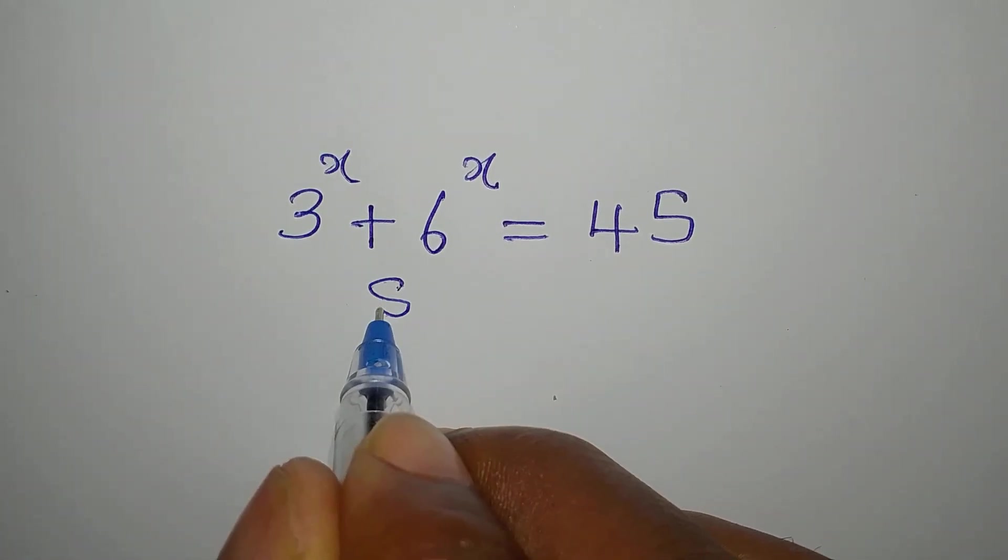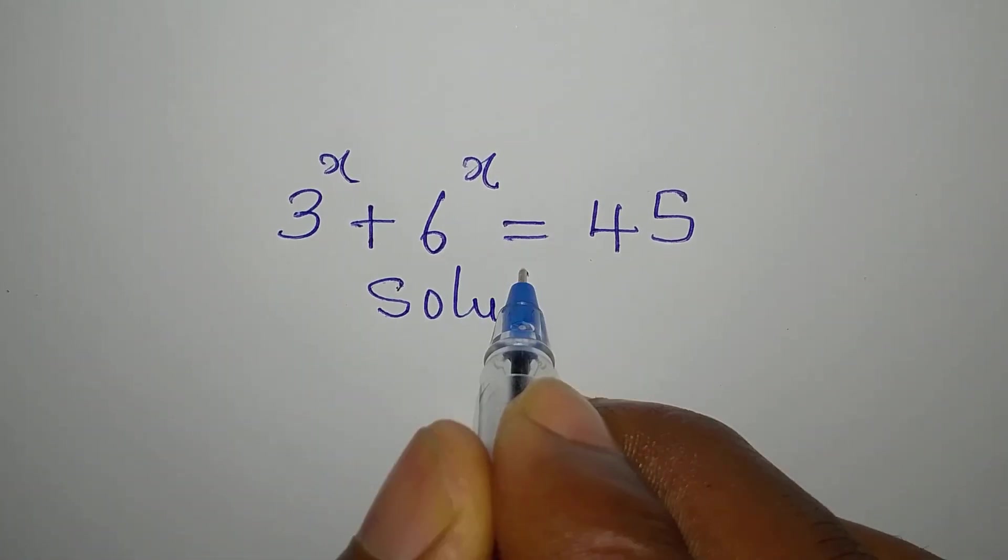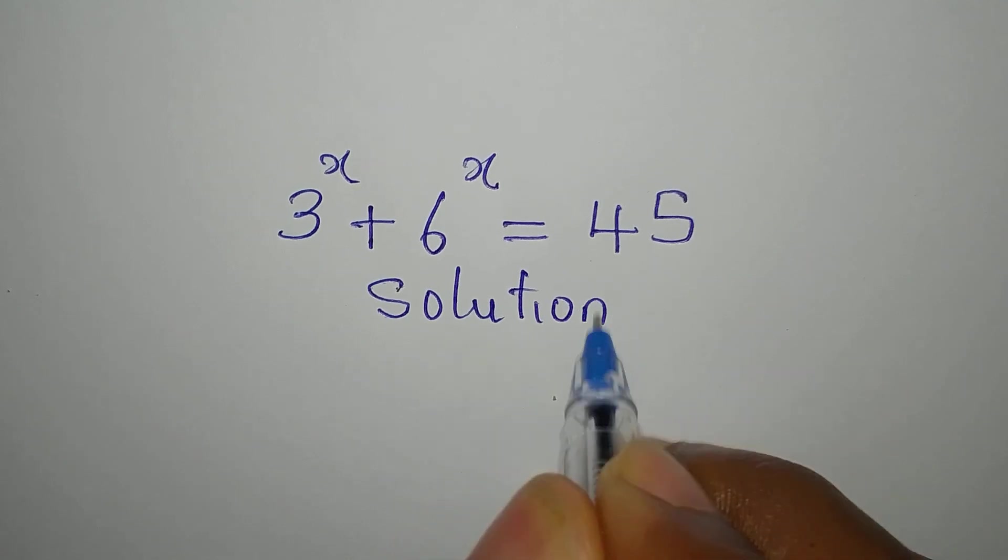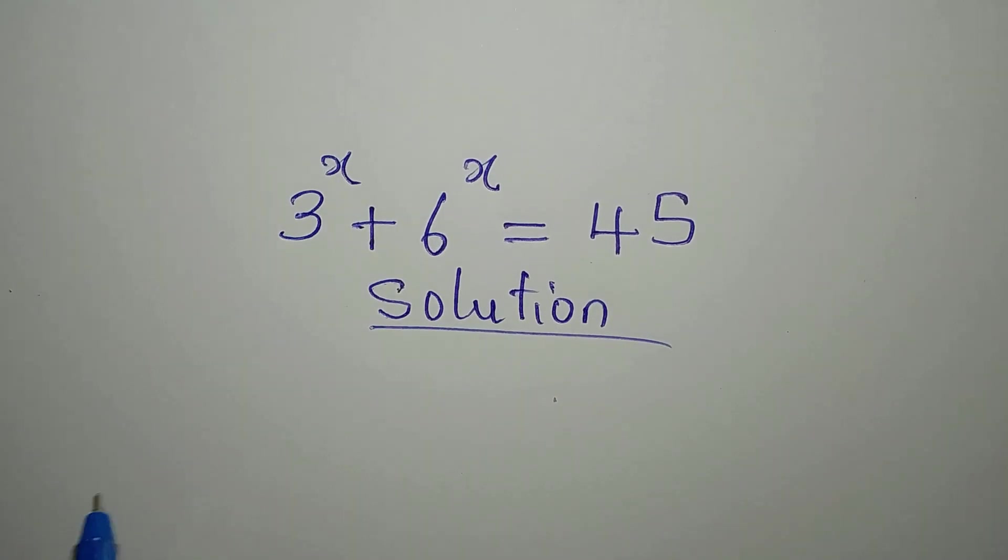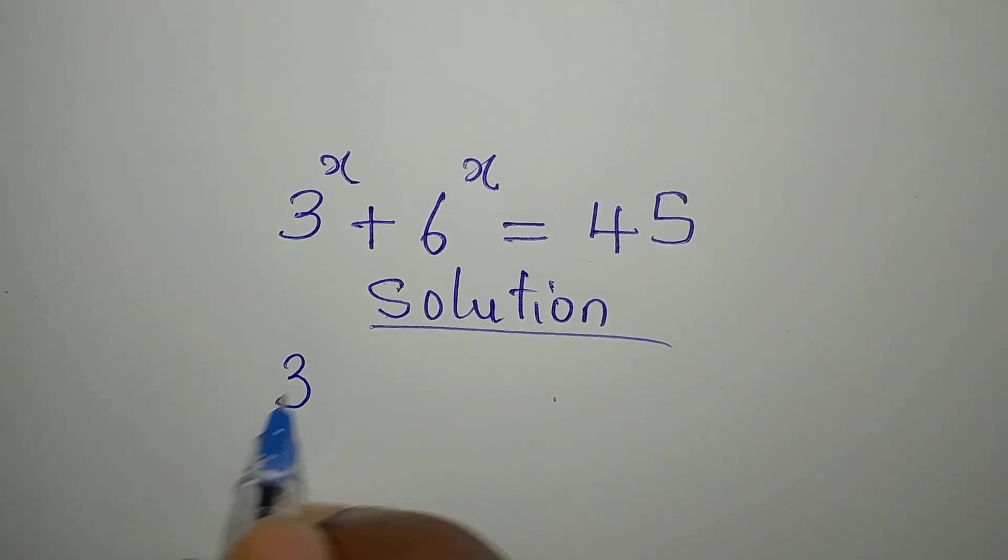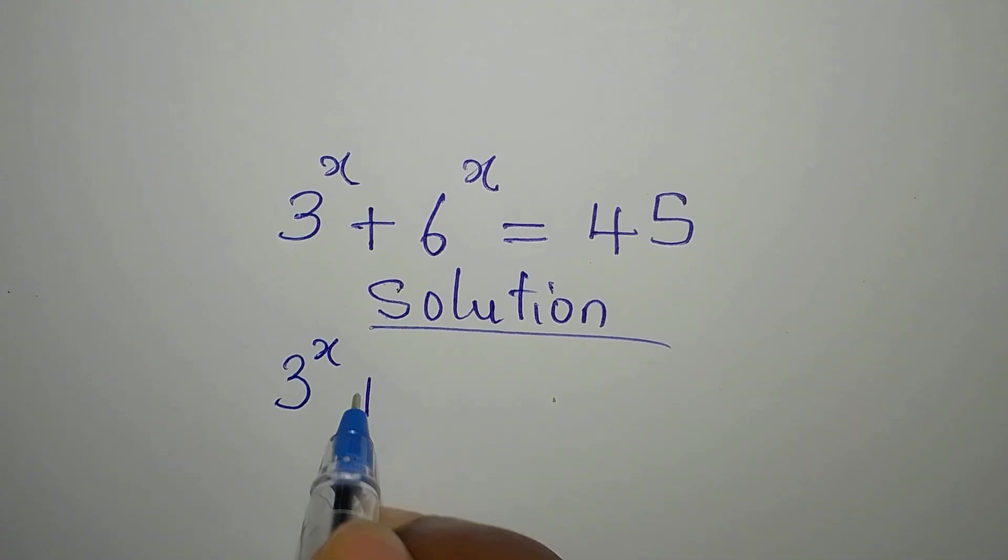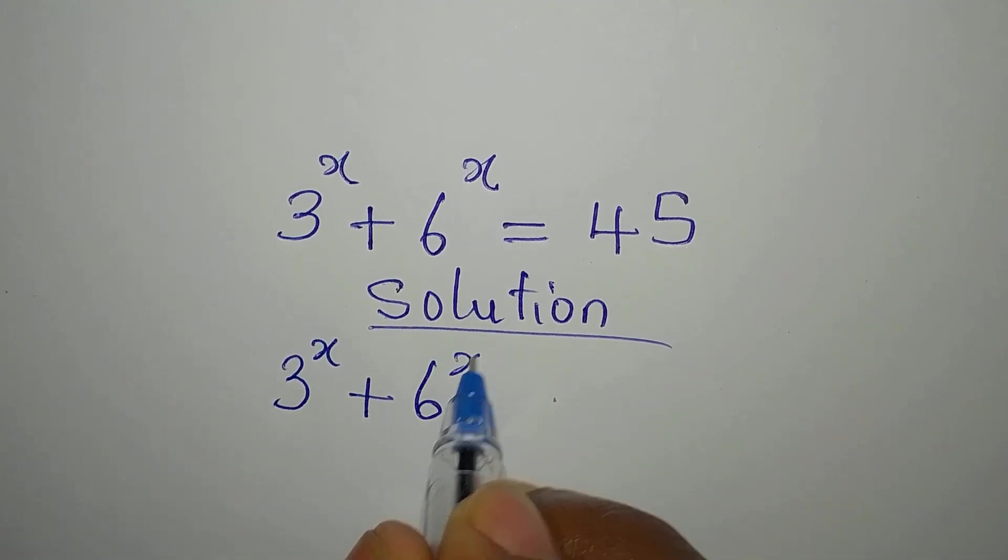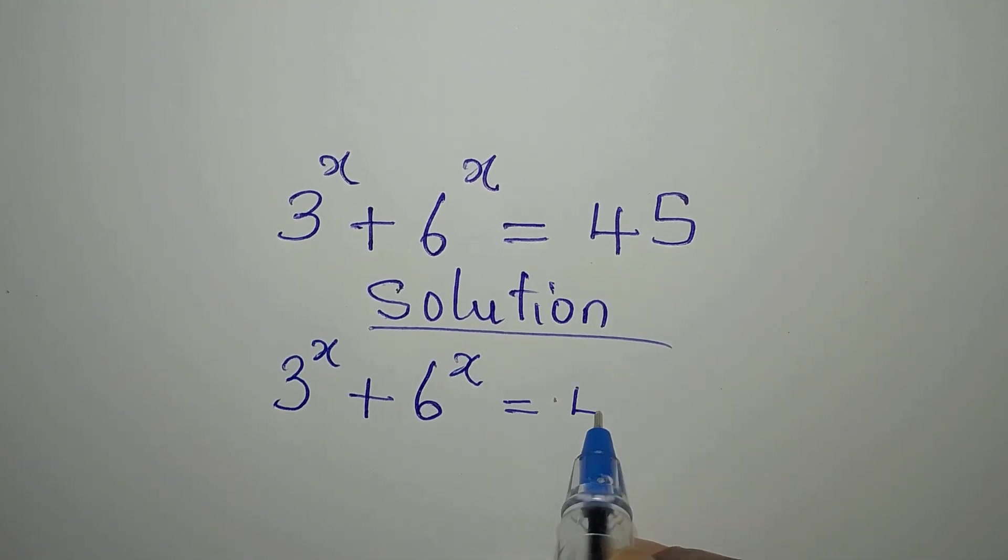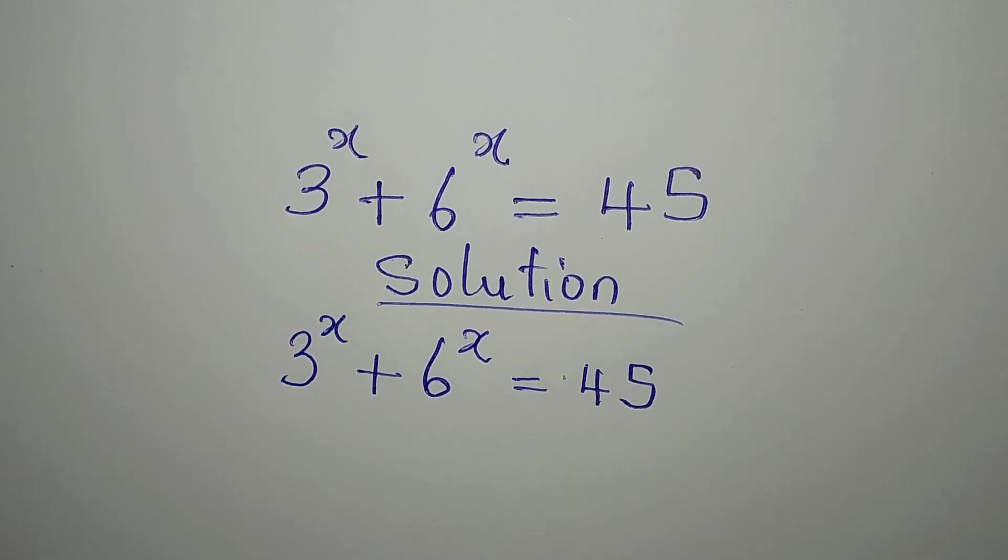Hello everyone, let's provide the solution to this problem. We have 3 to the power of x plus 6 to the power of x equals 45. Okay, let's deal with this.